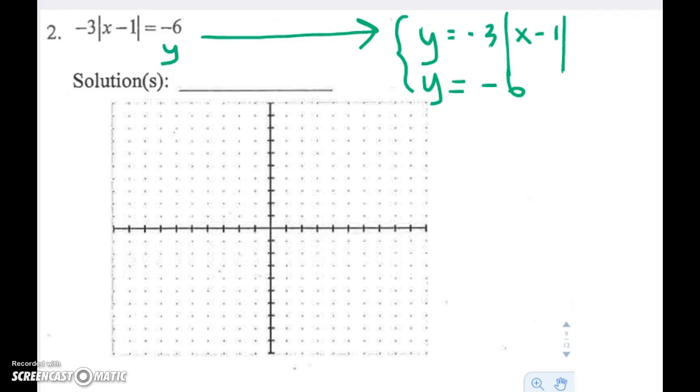So I'm going to go ahead and graph the first absolute value function using a table of values. Now looking at this absolute value function, my c value is negative 1. And I don't have a d value, which means it's 0. So the vertex of this graph is 1, 0, the opposite of c, d.